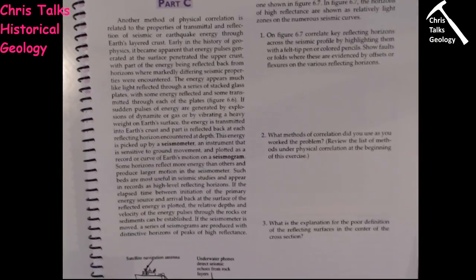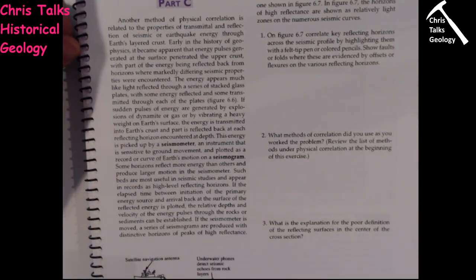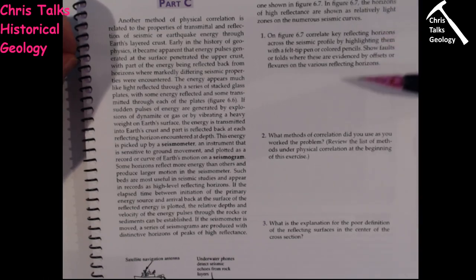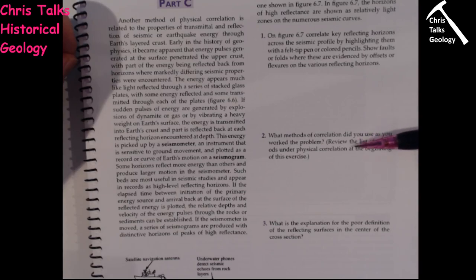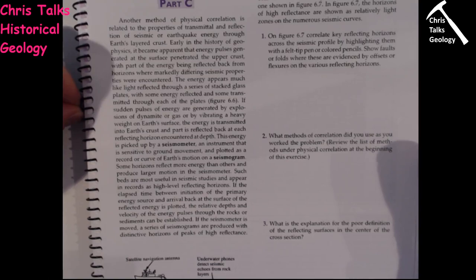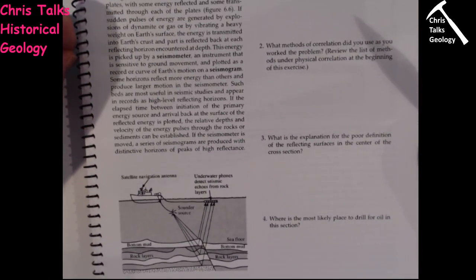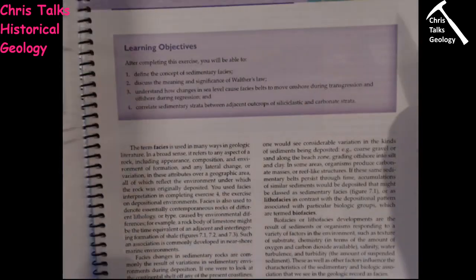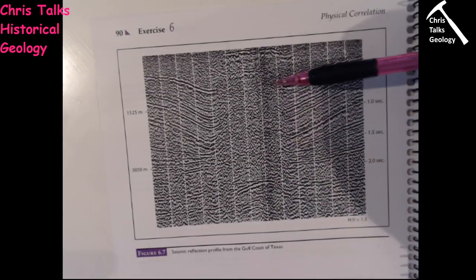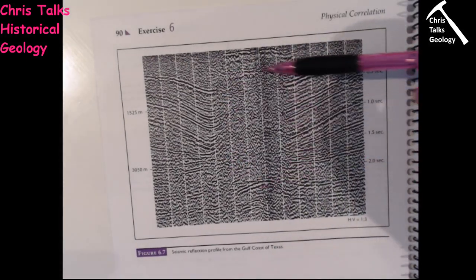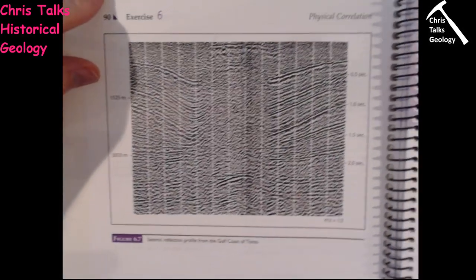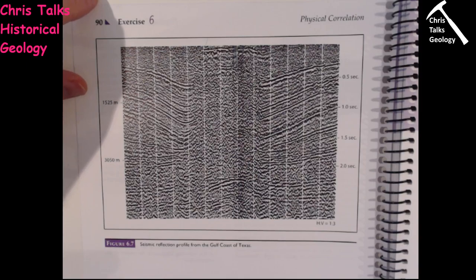Question 2: What method of correlation did you use as you worked through the problem? Review and list the methods under physical correlation at the beginning of the exercise — that one is essentially pre-answerable from the text. Question 3: What is the explanation for the poor definition of reflecting surfaces in the center of the cross section? In the middle, it is just a mess — referred to as noise — and we completely lose any clarity in the image.